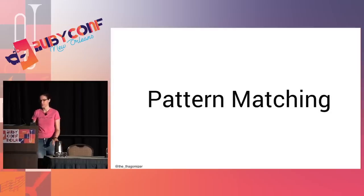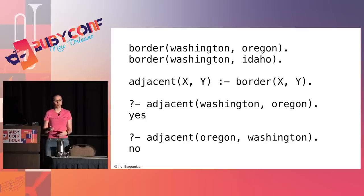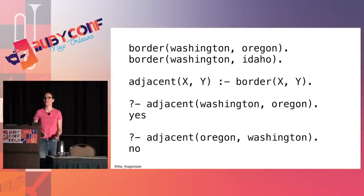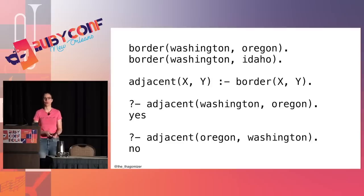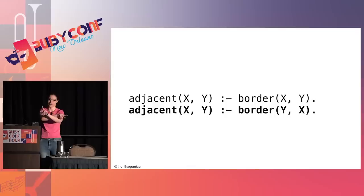Pattern matching languages are awesome. I can query the interactive Prolog terminal: 'Is Washington adjacent to Oregon?' — yes. 'Is Oregon adjacent to Washington?' — no, because Prolog is incredibly literal. Since I only have a fact that Washington borders Oregon but not Oregon borders Washington, Prolog doesn't know the reflexive case is true. So I have to teach Prolog by adding a second rule: adjacent(X,Y) :- borders(Y,X). Then 'Is Oregon adjacent to Washington?' correctly returns yes.